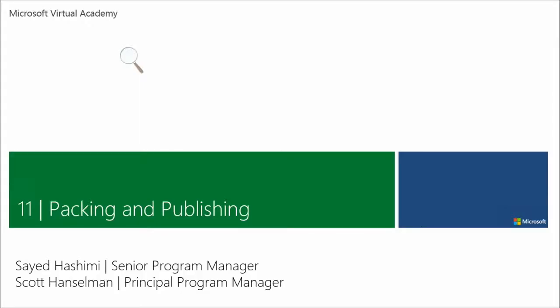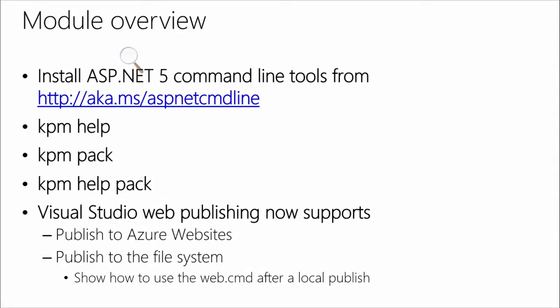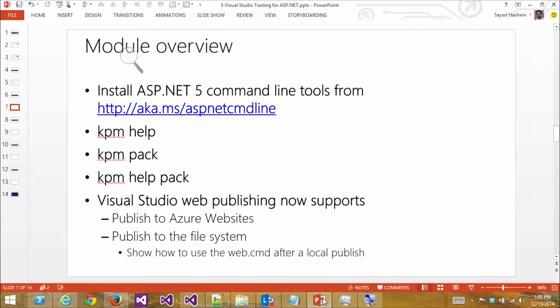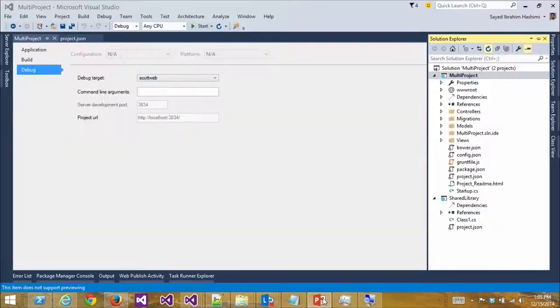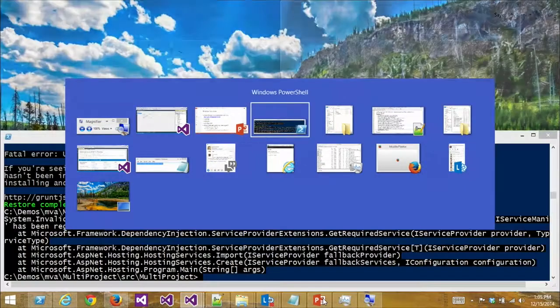Let's talk about packaging and publishing. For ASP.NET 5, we're supporting Azure websites and file system. We will have generic MS Deploy support — it's actually generic already, but you need a new version of MS Deploy which none of the hosters have installed yet. Publishing is more than just copying stuff into a folder — it's build, it's packaging, it's reconciling all the dependencies. Visual Studio Publishing calls KPM Pack and then takes the outputs and transports them over whatever protocol you had: MS Deploy, file system, or FTP.